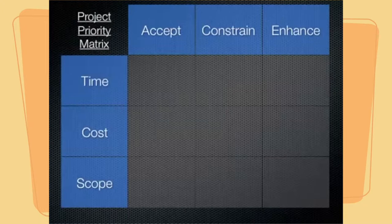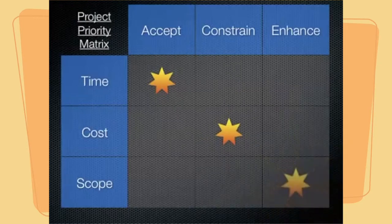Let's consider an example of a project in which the stakeholders are willing to accept a change in time, meaning a longer time to completion, but are not willing to accept changes in cost, that cost is constrained, and would like to enhance the scope if possible. In this case, the scope might be enhanced as long as it only leads to a longer time to completion, but not if it means an increase in cost.